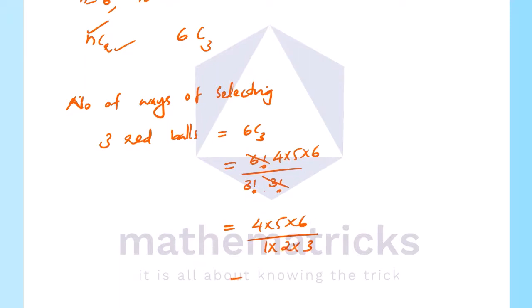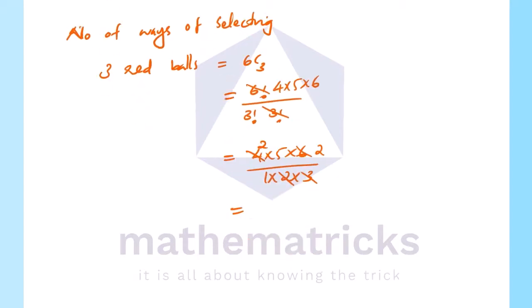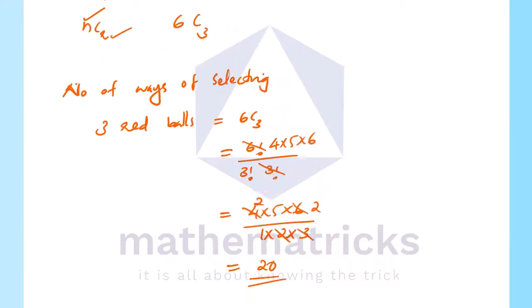After cancelling: 4 cancel with 2 into 2, and 6 cancels with 2 into 2 from the denominator. We get 2 into 5 equals 10, and 10 into 2 equals 20. So there are 20 ways to select 3 red balls.